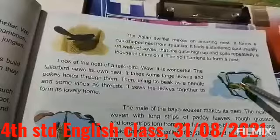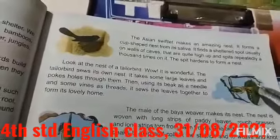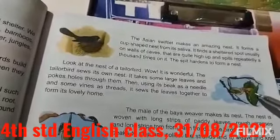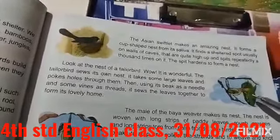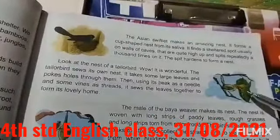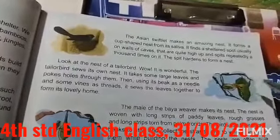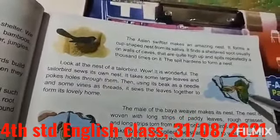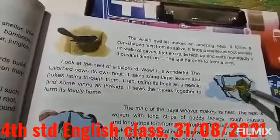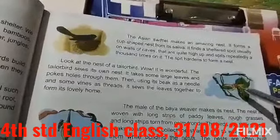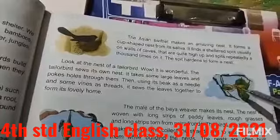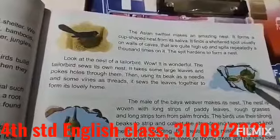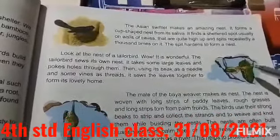The Tailor bird uses its beak as a needle and some veins — veins means fibers which are present in the leaves — as threads, and it sews the leaves together to form its lovely nest. This is about the Tailor bird nest.